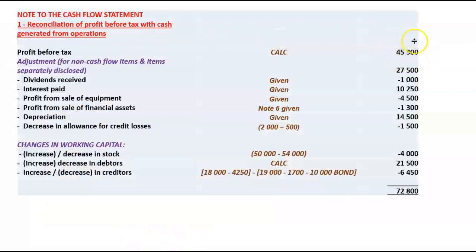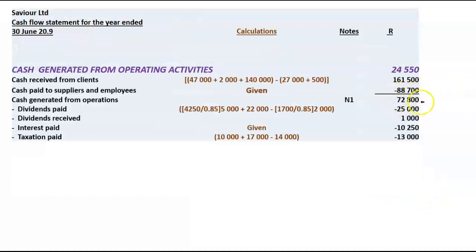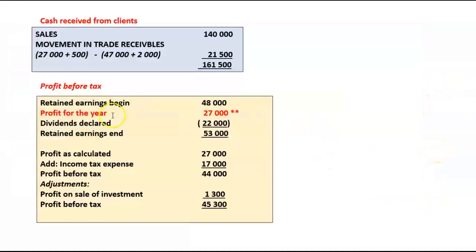In your reconciliation note, you start with profit before tax of $45,300, then adjust for non-cash flow items and separately disclosable items, account for changes in working capital to arrive at cash generated from operations, and then show separately disclosable items. What is very useful is this profit before tax calculation — go and have a look at it and make sure you understand the rationale behind it.